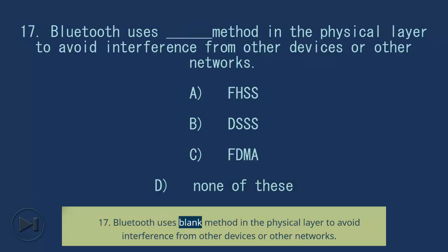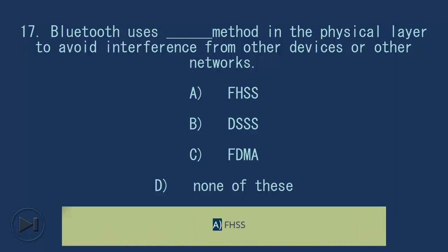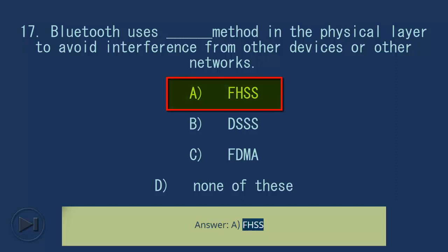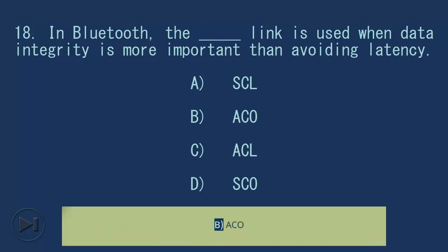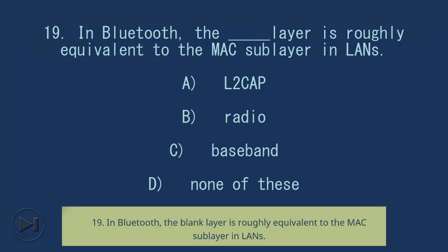Question 17: Bluetooth uses blank method in the physical layer to avoid interference from other devices or networks. A. FHSS, B. DSSS, C. FDMA, D. None of these. Answer: A. FHSS. Question 18: In Bluetooth, the blank link is used when data integrity is more important than avoiding latency. A. SCL, B. Echo, C. ACL, D. SEQ. Answer: C. ACL.